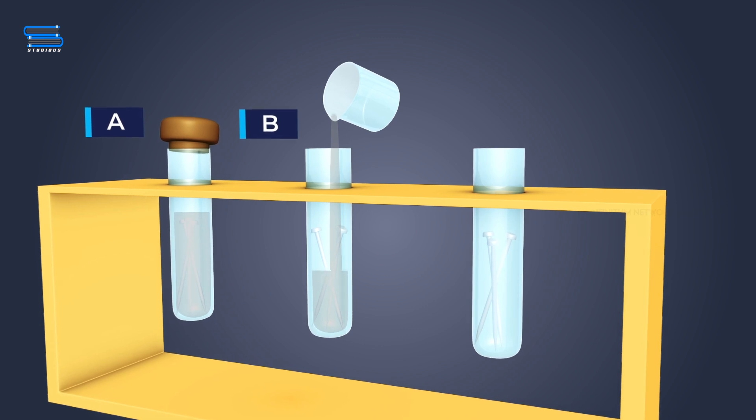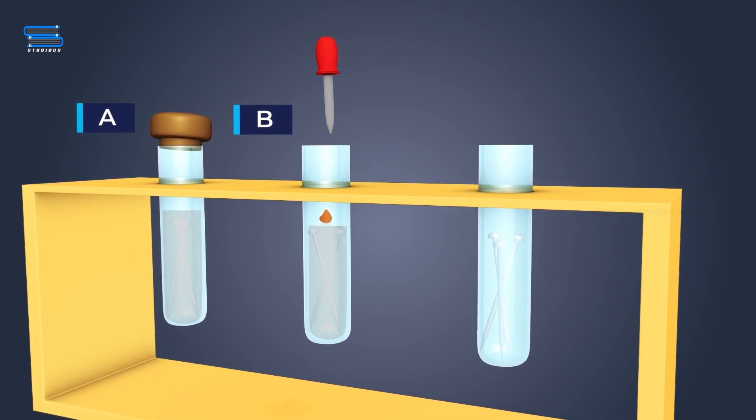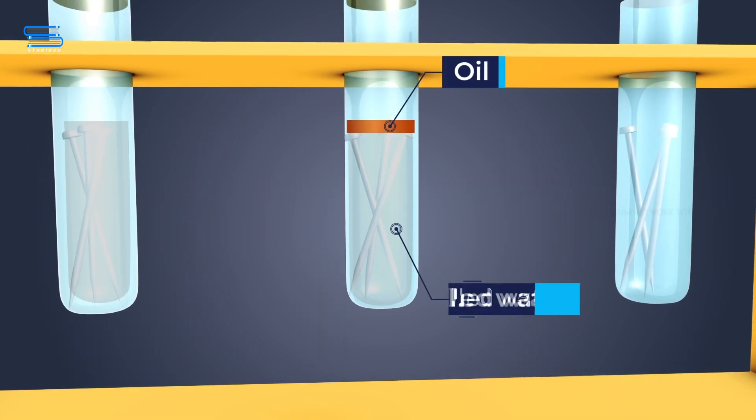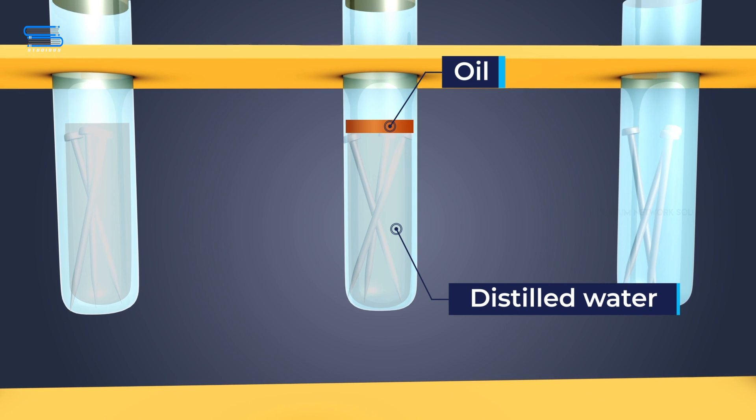Boil distilled water and add about 1 mm of oil to test tube B, and cover with a cork. The air is prevented from dissolving in water due to the oil, which floats on the water.